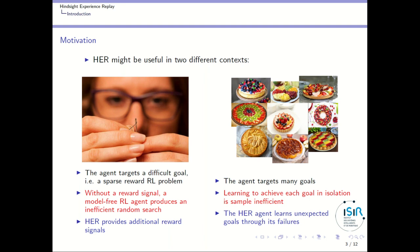If the agent is learning to achieve just one goal in isolation, this is very simply inefficient, because by trying to achieve this goal, it might by chance achieve other goals from time to time. In that case, the Hindsight Experience Replay agent will be able to learn unexpected goals through its failures, which is not the case for the standard agent.